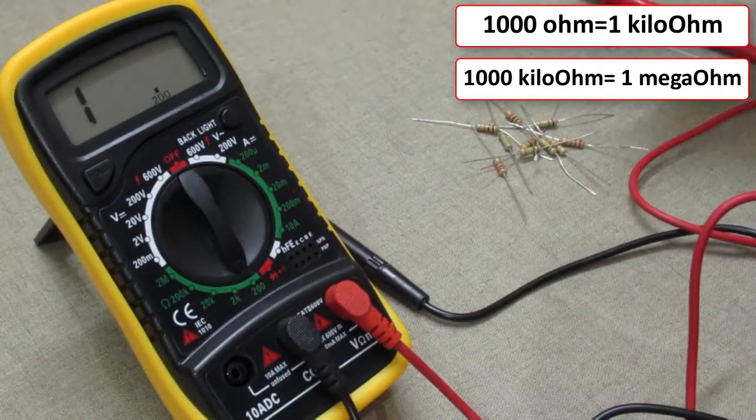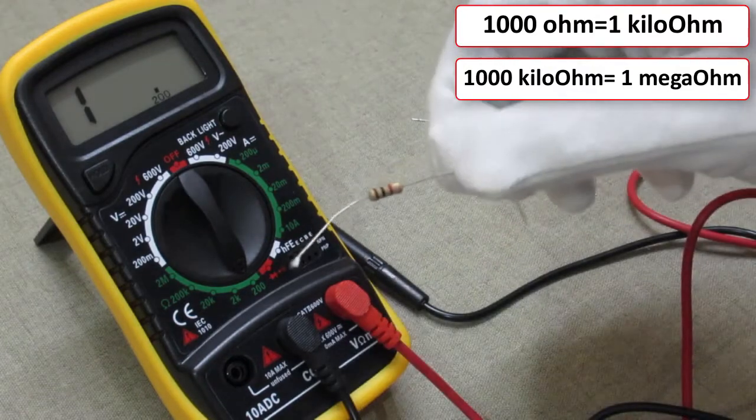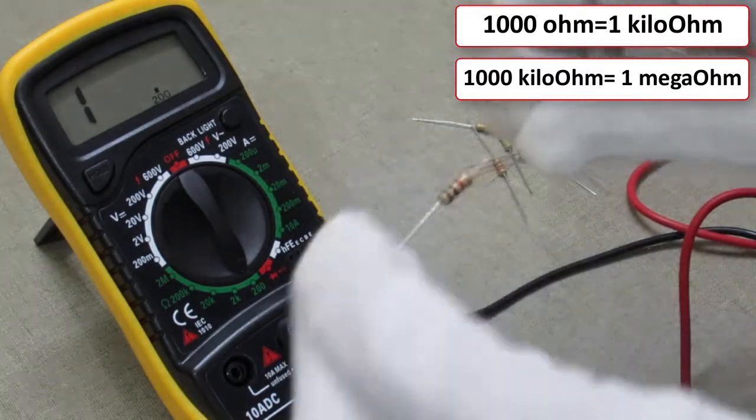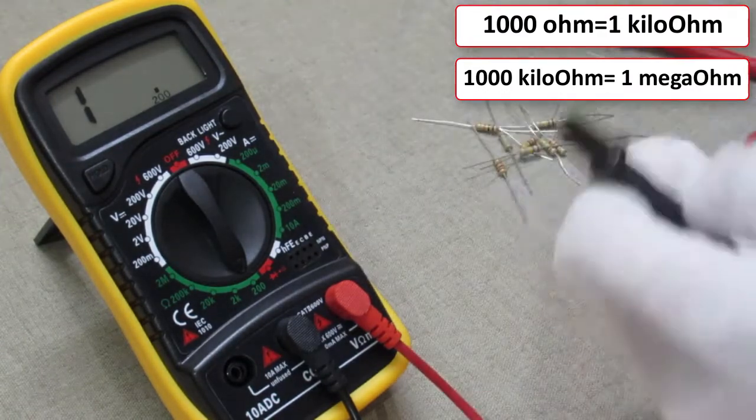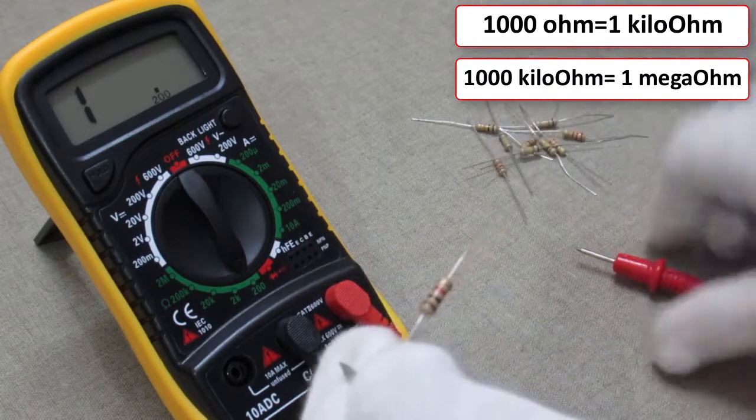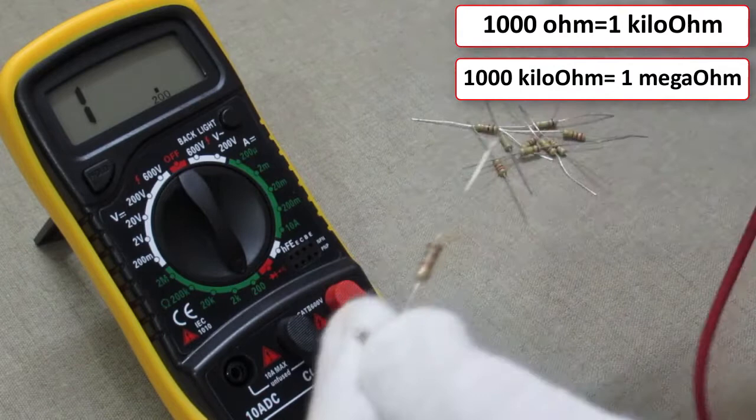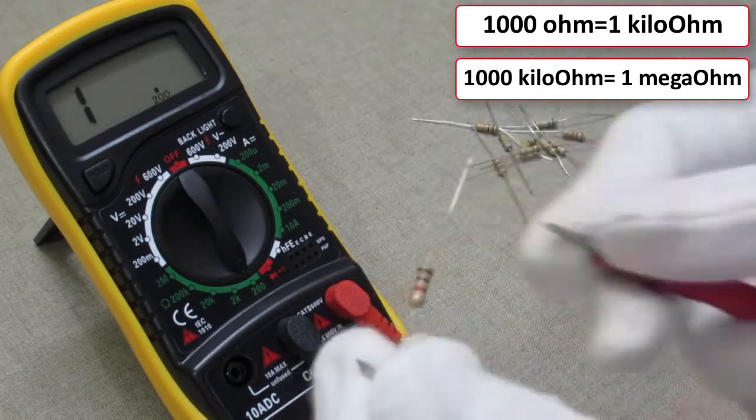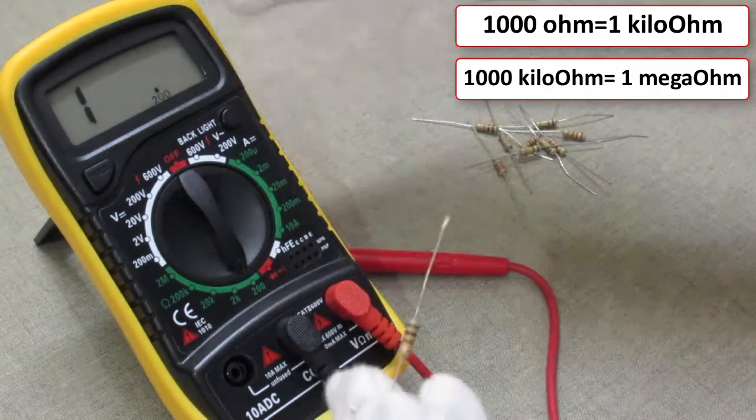Take a resistor and touch the multimeter probes to the resistor. You can touch any probe to any side of the resistor. If the multimeter doesn't show any resistance value, that means the resistor has higher resistance value. So rotate the digital multimeter rotary switch to a higher range.